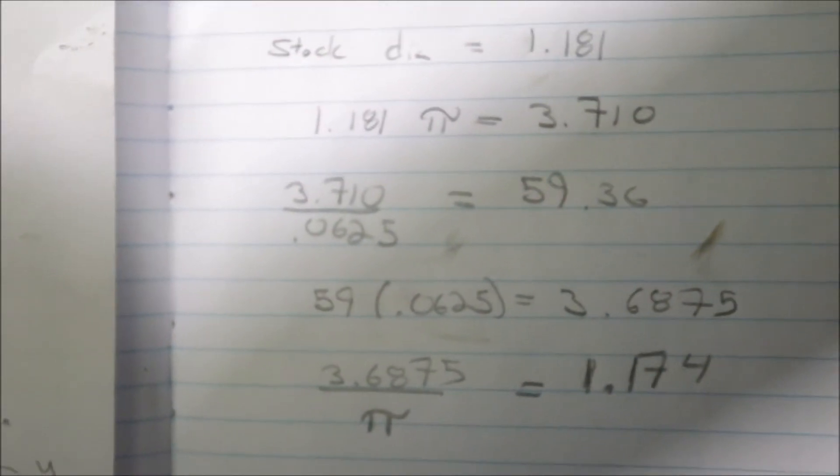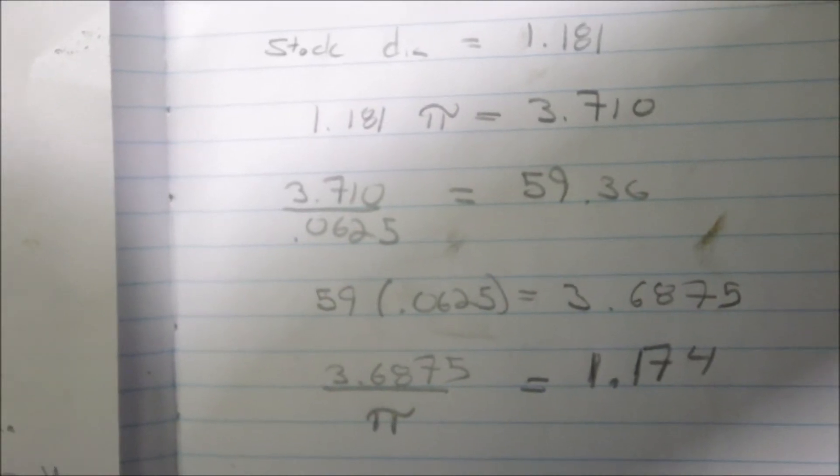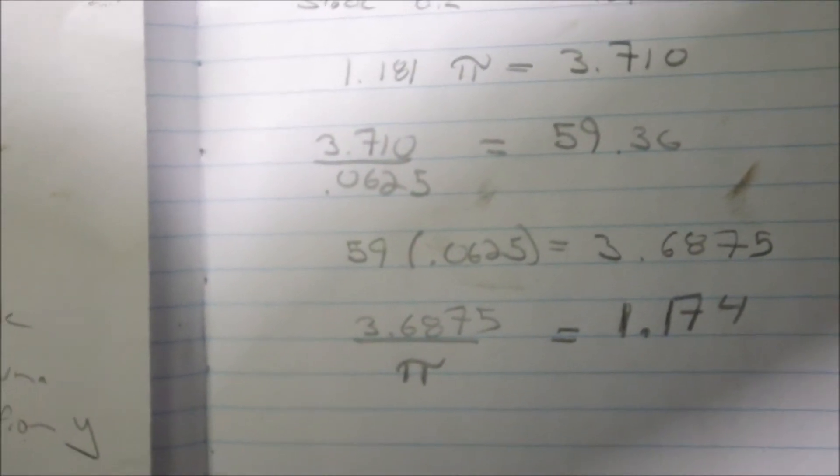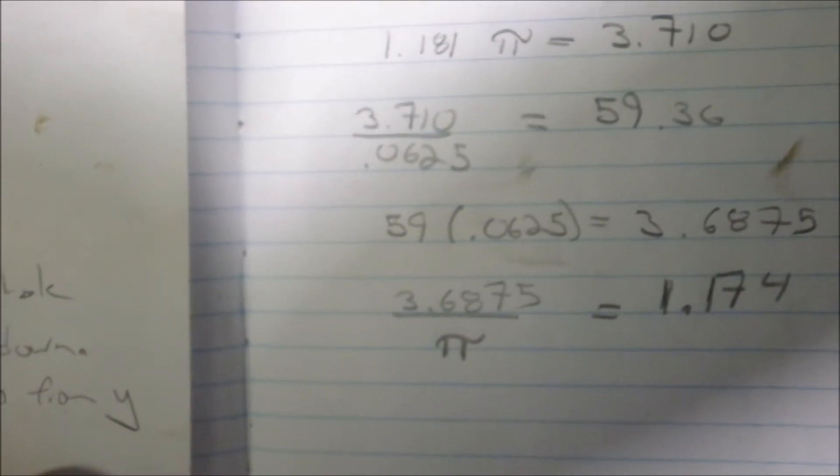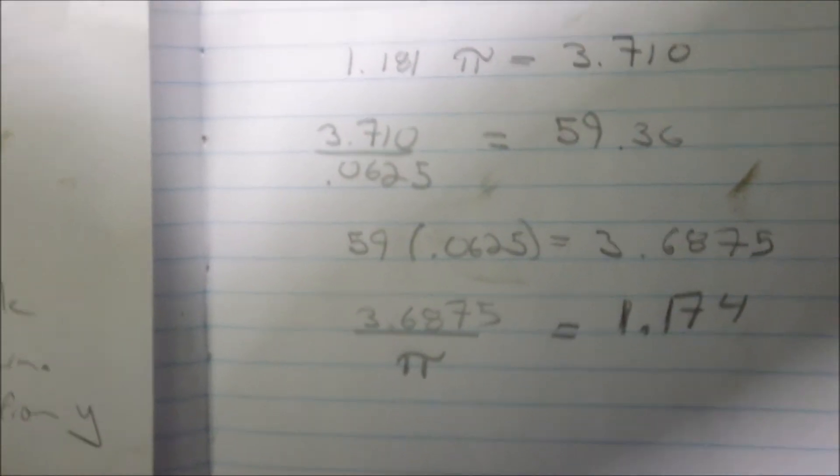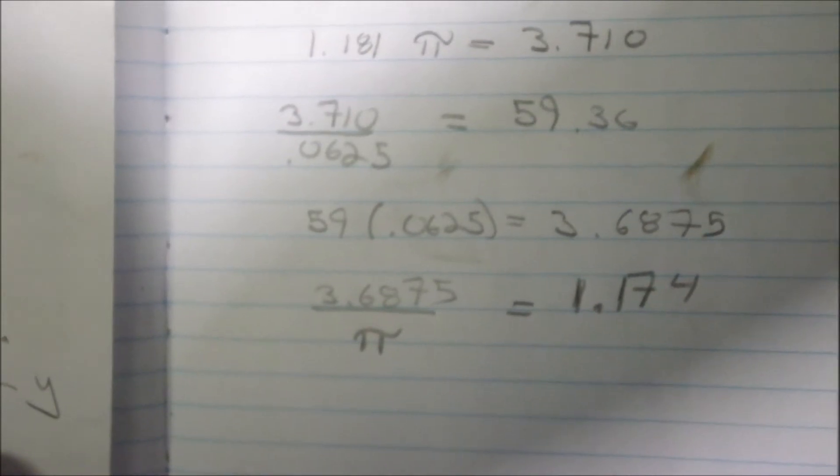So what you do at this stage is you either go up or down. Down makes most sense, I guess. I went down from 59.36 to 59. And then you work backwards in your equation. Now you're multiplying the 59, the whole number, by the length of your teeth.